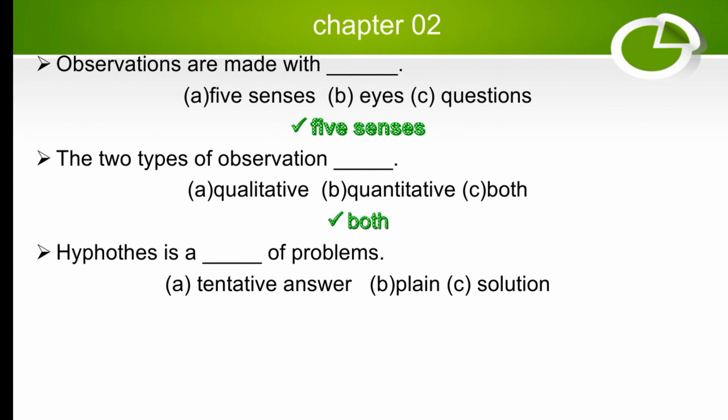Hypothesis is a what of a problem? The options are tentative answer, plan, or solution. The right answer is tentative answer — hypothesis is a tentative answer to a problem.